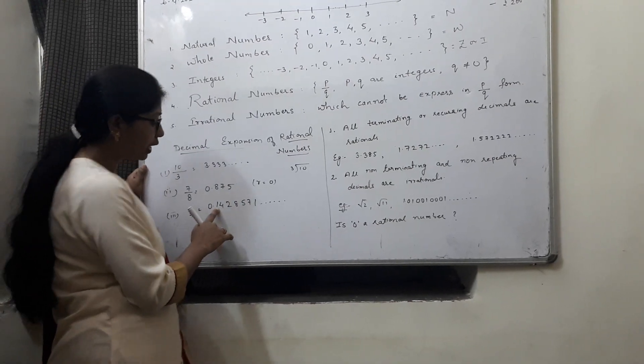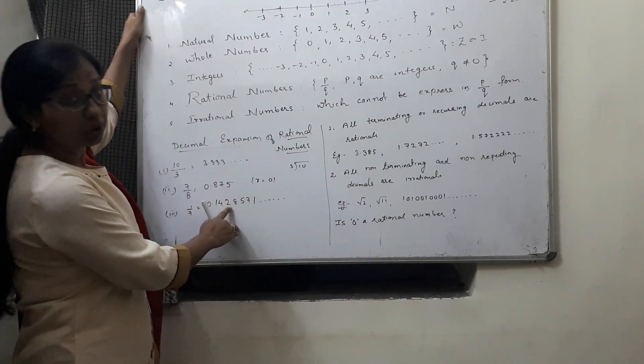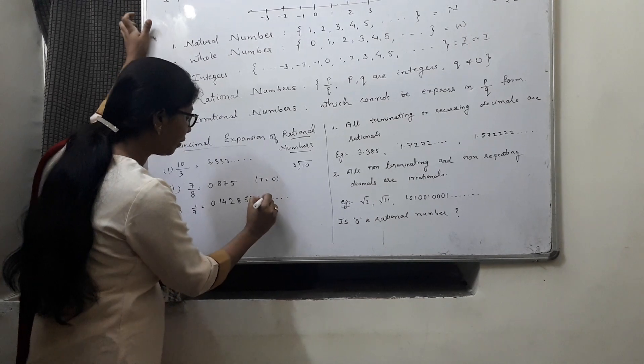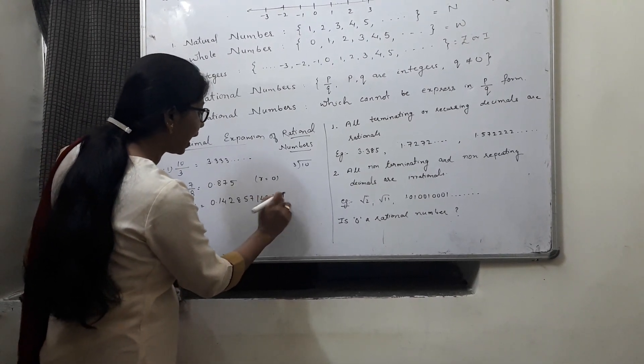But for 1 by 7, we get 1, 4, 2, 8, 5, 7. Again, after 7, it will repeat 1, 4, 2, 8, 5, 7 and so on.